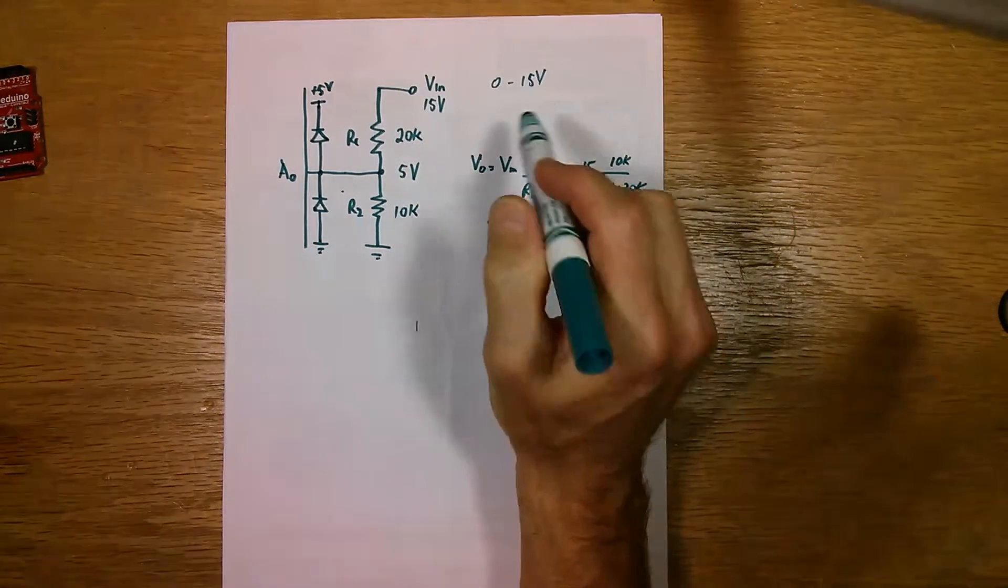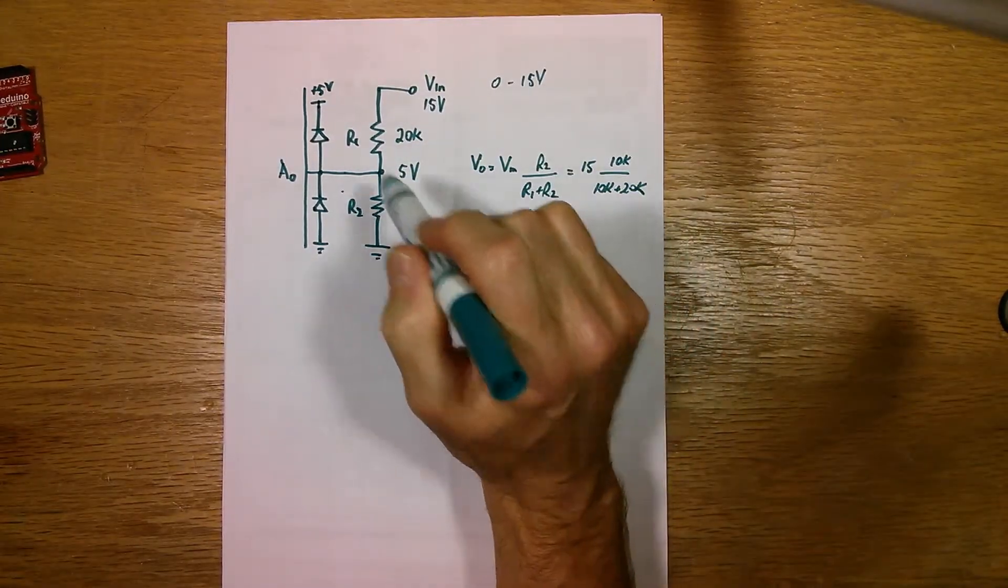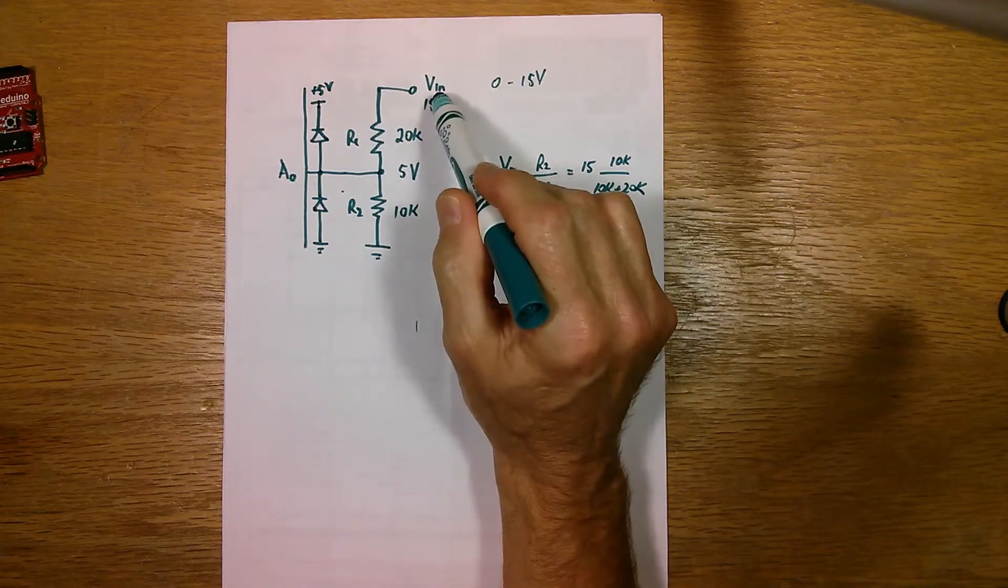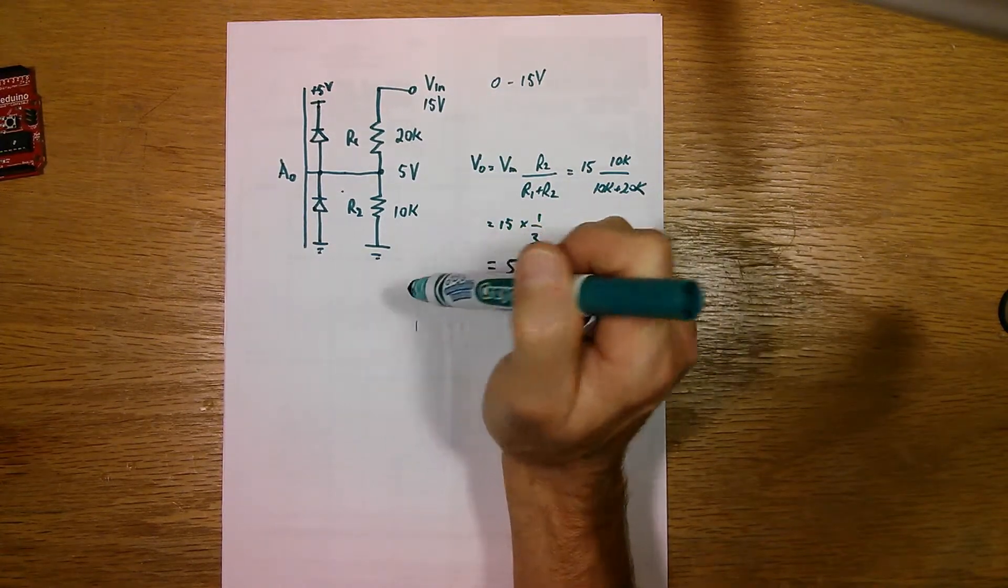If you're just playing around with this experimentally just for fun, you don't need these diodes just as long as you don't put any more than 15 volts in here and don't take it below ground.